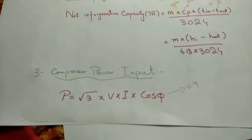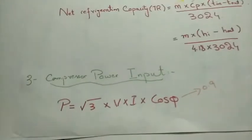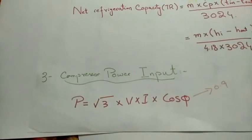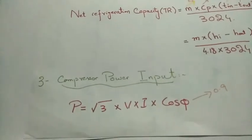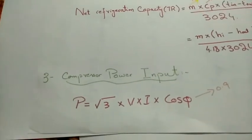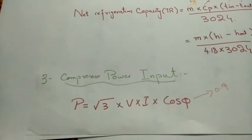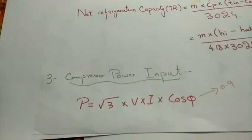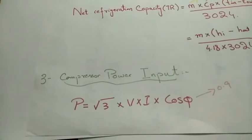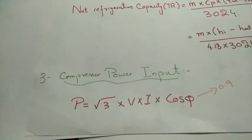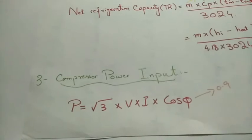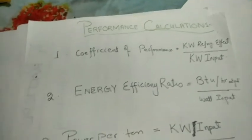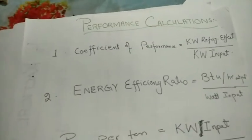The third important term is compressor power input. When an electric chiller, a smaller unit, or a split AC is running, there is an electric compressor driving that cooling equipment. Its power can be calculated by: Power = √3 × Voltage × Current × Power Factor (cos φ), which is normally taken as 0.9.